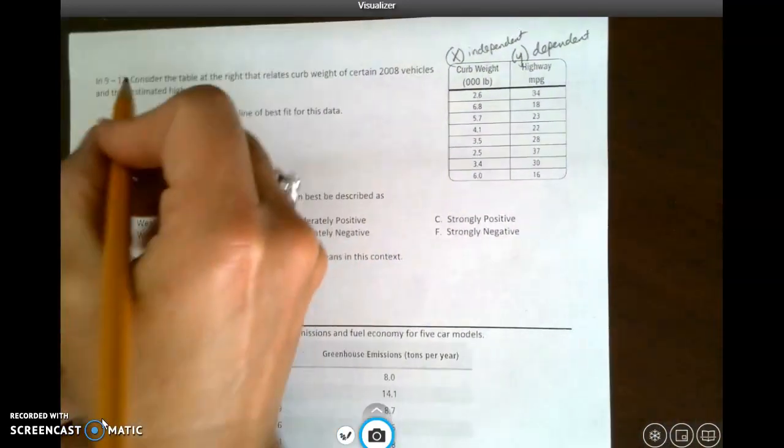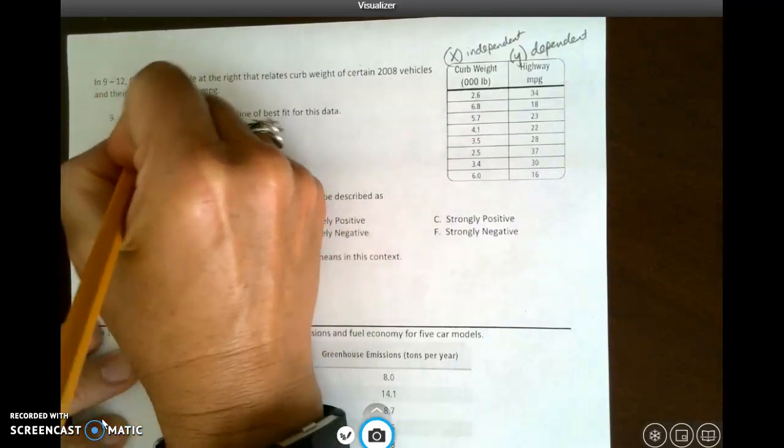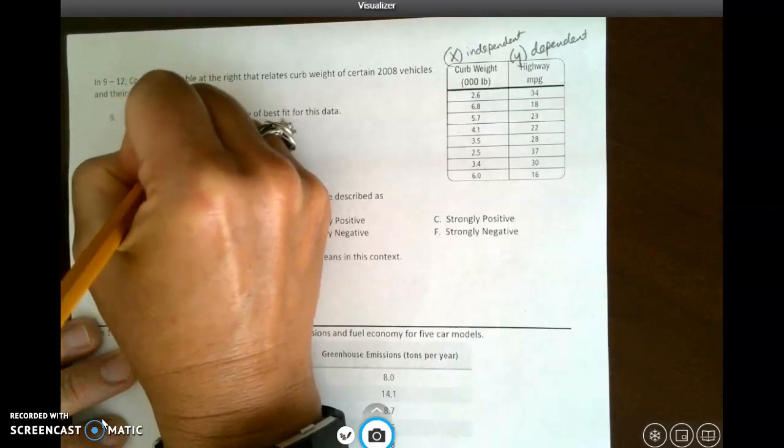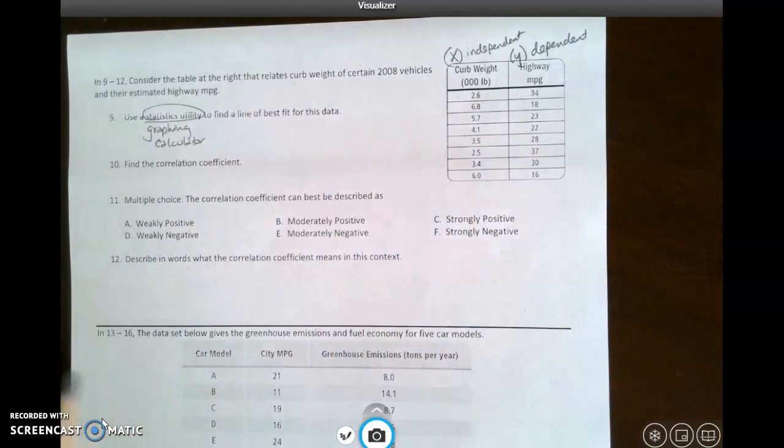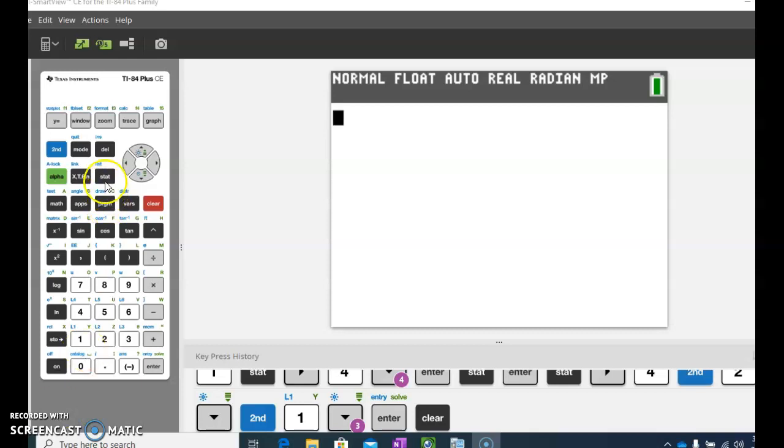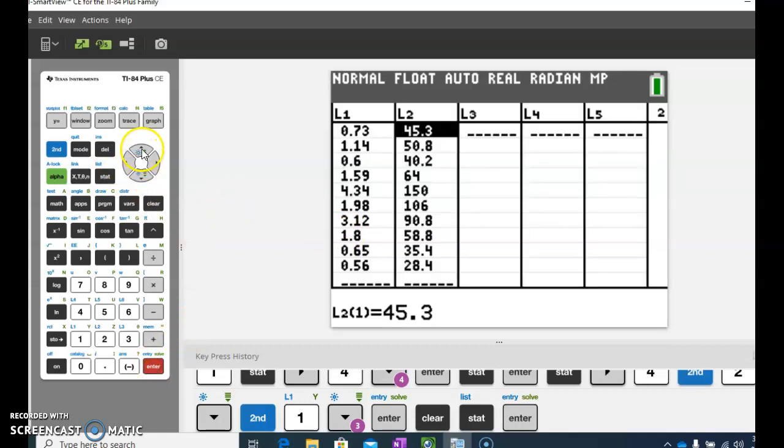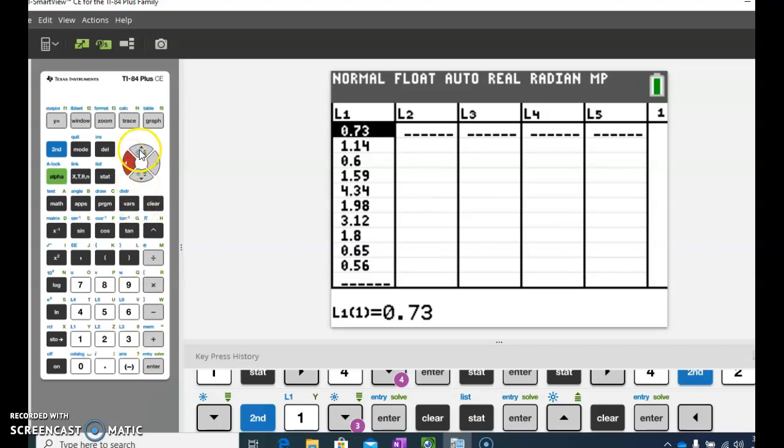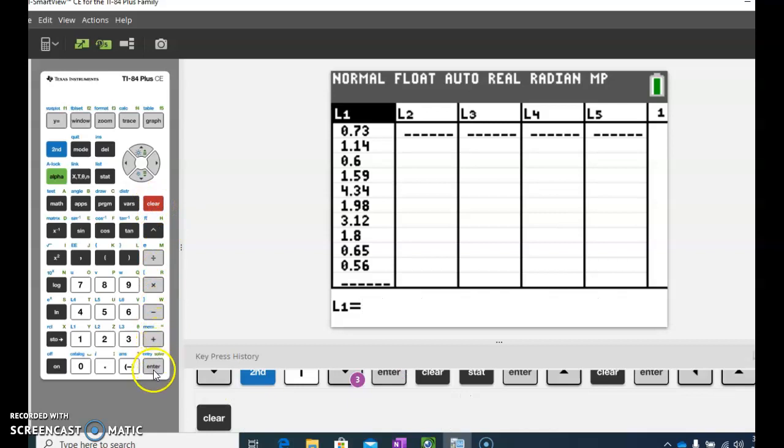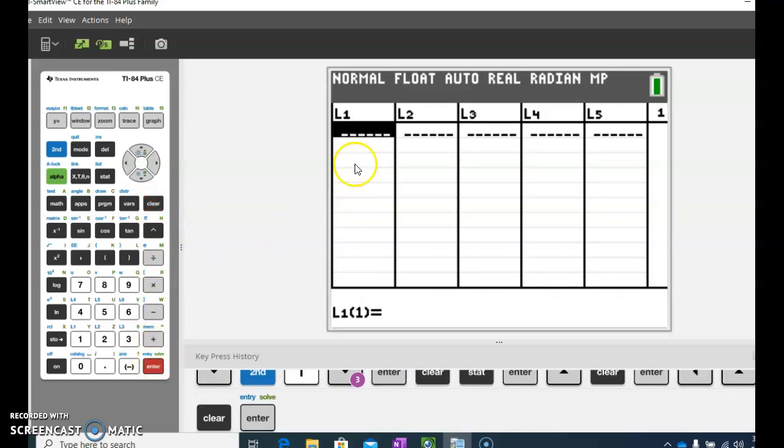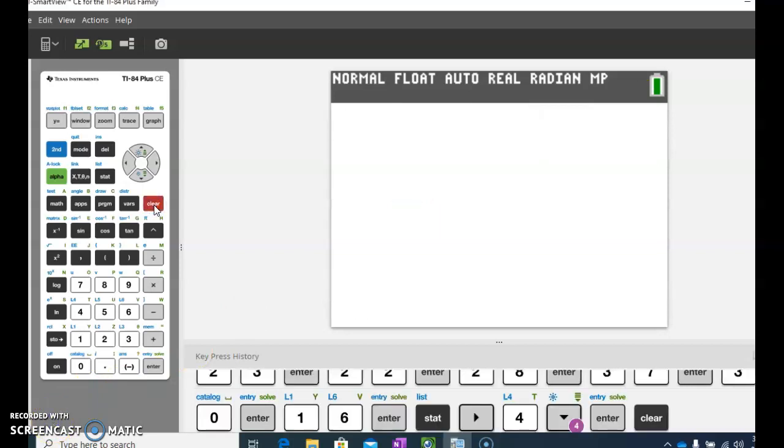And it asks us to use a statistics utility, which, remember, is your graphing calculator, and find the line of best fit for this data. So I'm going to have you enter this data into the graphing calculator. In case you forgot how, we're going to go to stat and edit. And because I already have this data in here, I'm going to need to go to the top of the column and hit clear and enter. That clears out my columns. Now in L1, I'm going to put the curb weight and in L2, I'm going to put the highway miles per gallon.